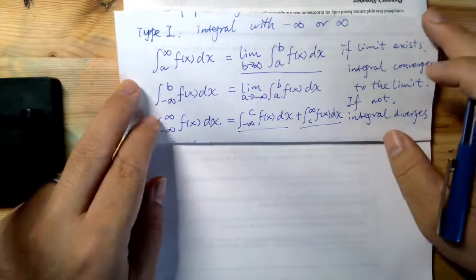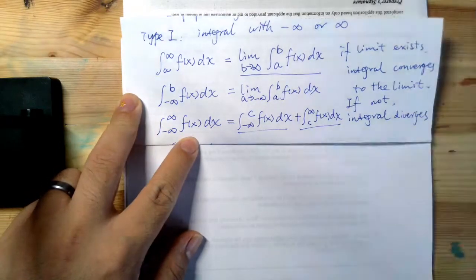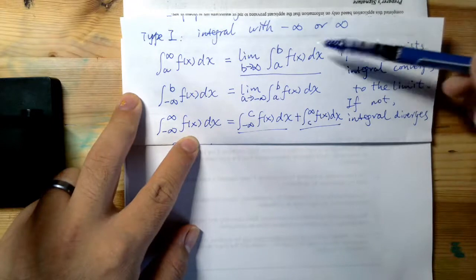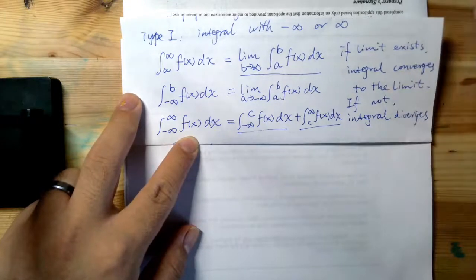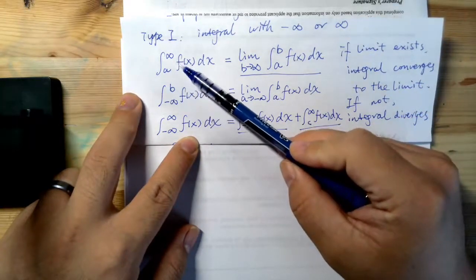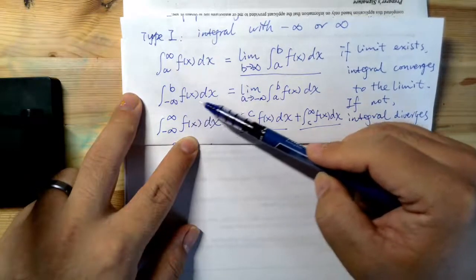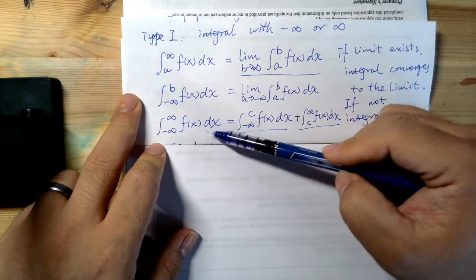So now let us look at a new concept. It's called the Type 1 Improper Integral. Loosely speaking, the Type 1 Improper Integral is the integral where the limit gets involved with either negative infinity or positive infinity. So for example, the integral from a to positive infinity f(x) dx, or the integral from negative infinity to b f(x) dx, or from negative infinity to positive infinity f(x) dx.